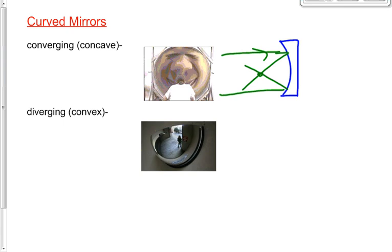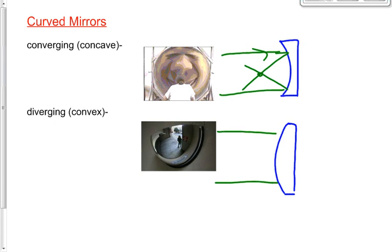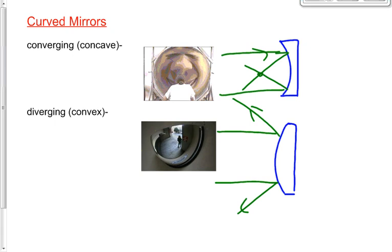The other type of mirror is a diverging mirror, or a convex mirror — exactly the opposite. Instead of being caved in and thinner in the middle, if you look at it from the side it's thicker in the middle than at the edges. We also call it diverging because the rays of light hit the mirror and diverge away from each other. Converging, diverging. Concave, convex.